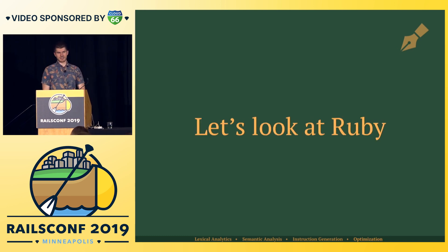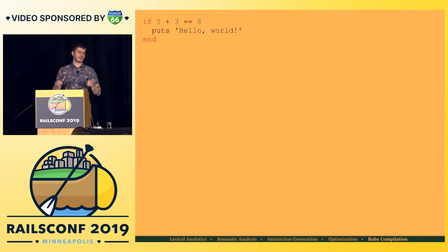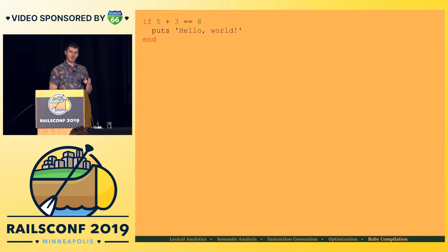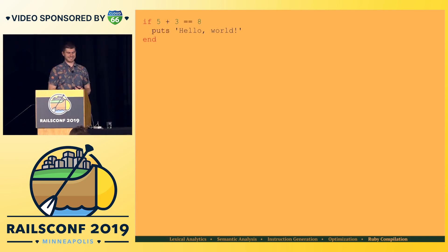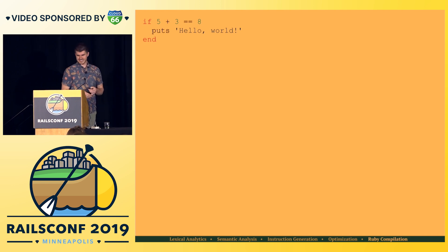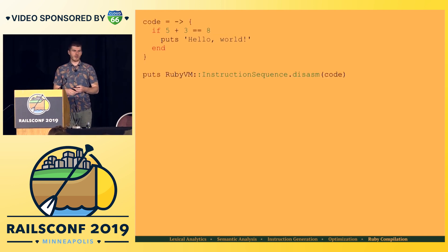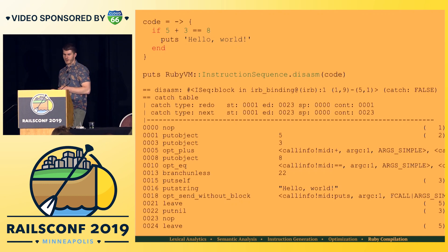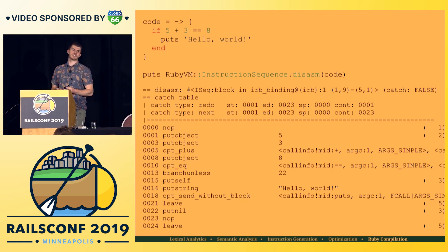Let's look at Ruby. If five plus three is eight, then puts 'hello world' — you would think this is always true, and for the most part you are correct. If we look at the instructions generated for this, we see a whole bunch of stuff.